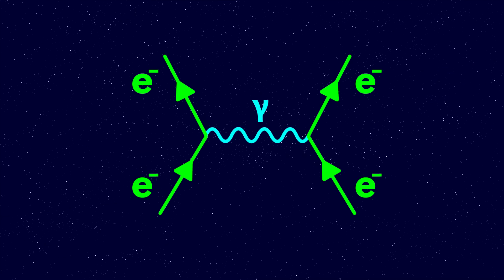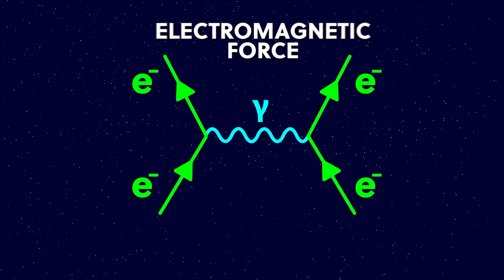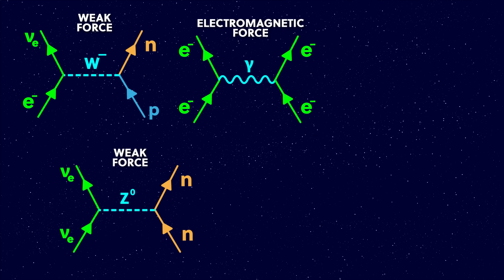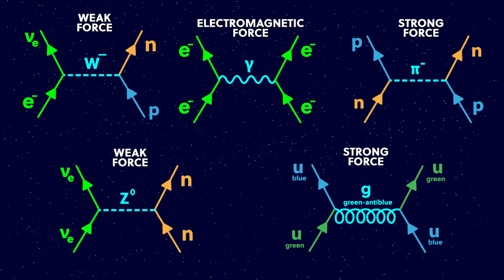Here's when we met earlier, showing two electrons interacting with a photon, and it's an example of an interaction via the electromagnetic force. Here are a couple more, but these are interactions involving the weak force, and here's a couple involving the strong force.